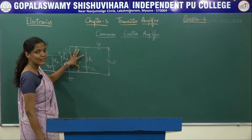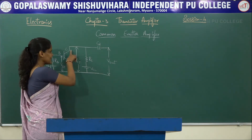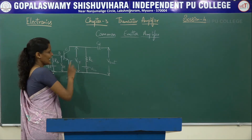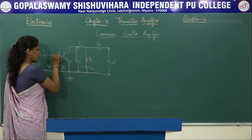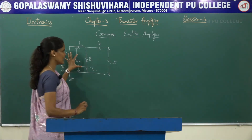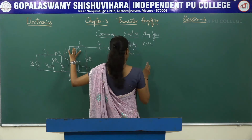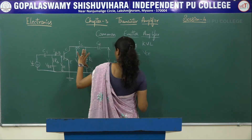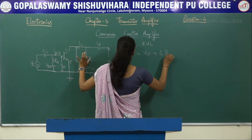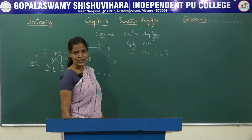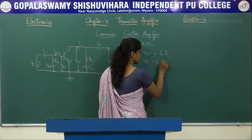Now let us try to apply KVL for the output loop. Applying KVL for this particular loop: Vcc is the voltage source, Vce is the voltage drop across the collector and emitter junction, and Rc is the collector resistor. Here Ic is the collector current and Ib is the base current. Applying KVL, we get: Vcc = Vce + Ic·Rc. Rearranging, we get: Vce = Vcc − Ic·Rc.